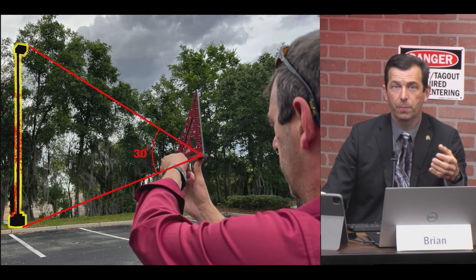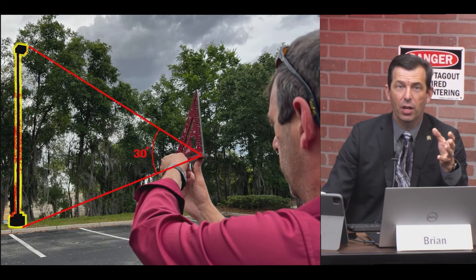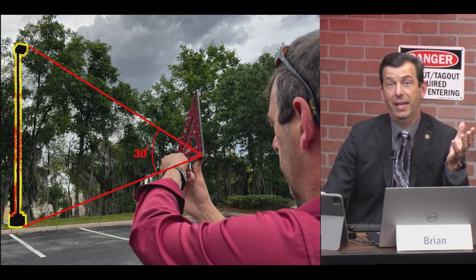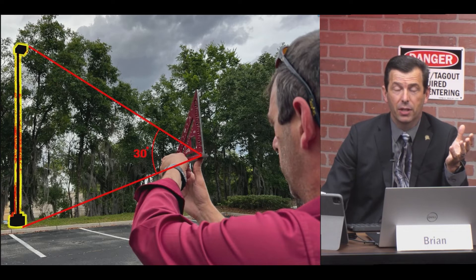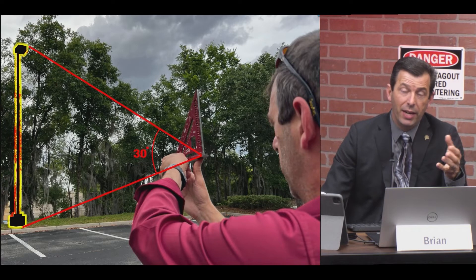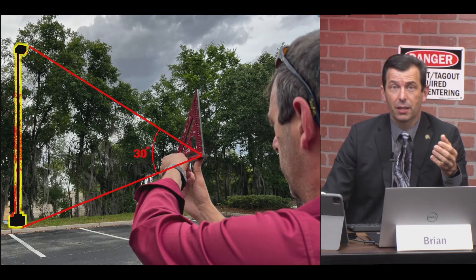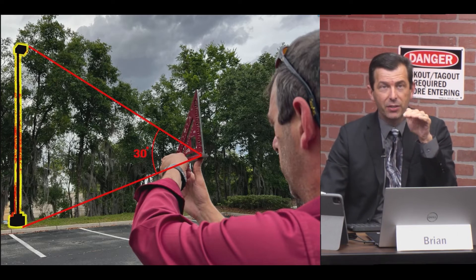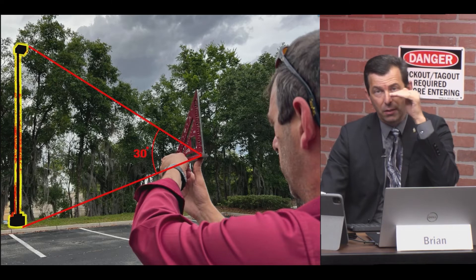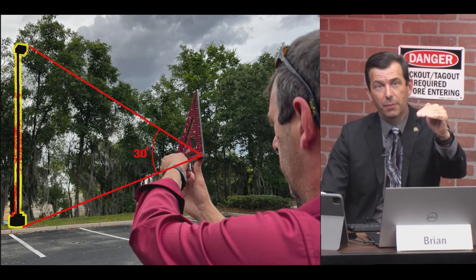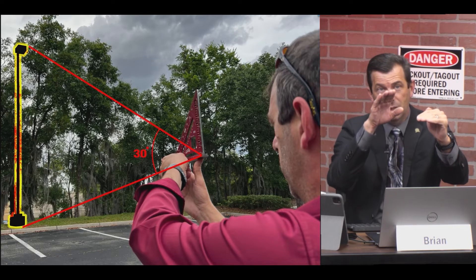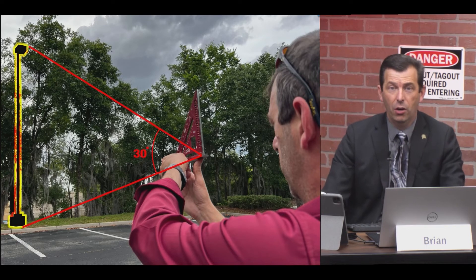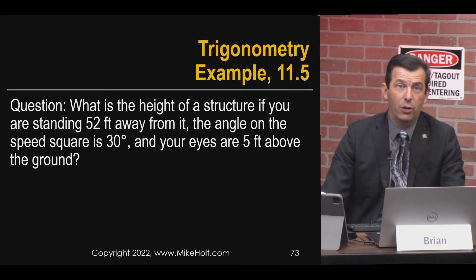I'm out in front of our building here — there's a light pole on the other side of the parking lot and I wondered how tall it is. This would be useful if you wanted to know how big of a boom lift you'd need. I whipped out my speed square, sighted down it, and discovered that with the speed square level, looking at the bottom of the pole, the top of the pole was at a 30-degree angle.